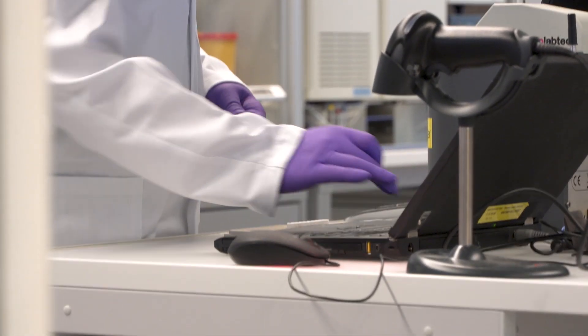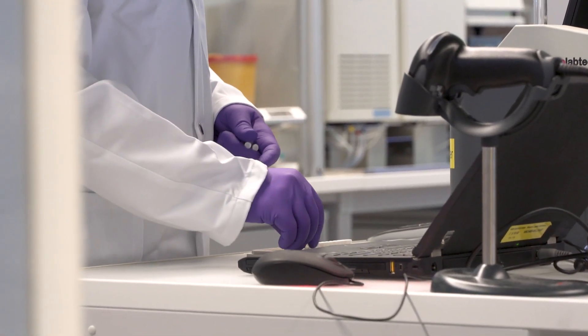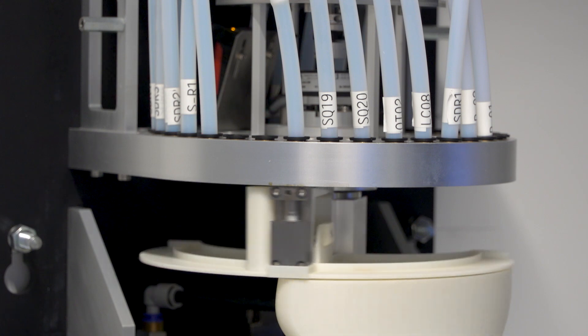A barcode tells the computer which protocol to use. The system uses the power of air to send the sample through the network of tubing to the right destination.